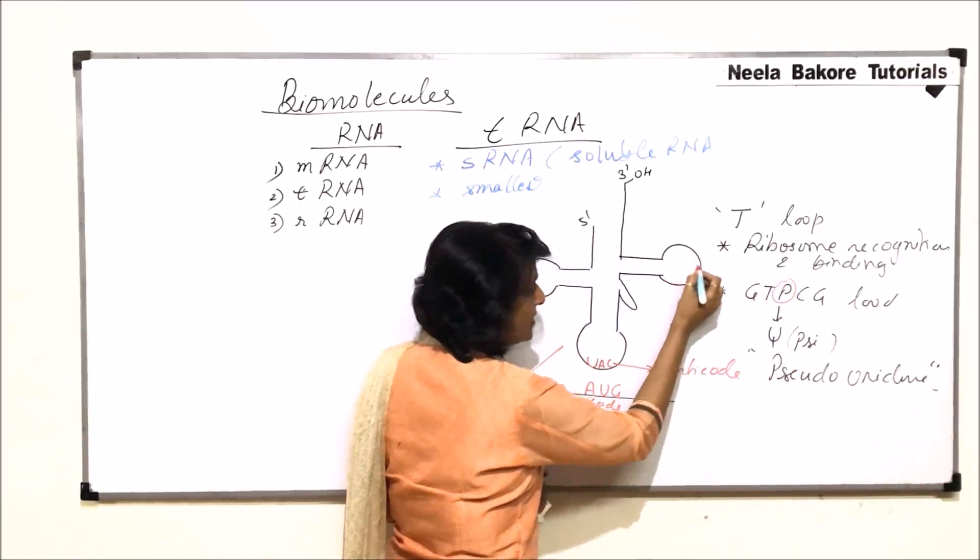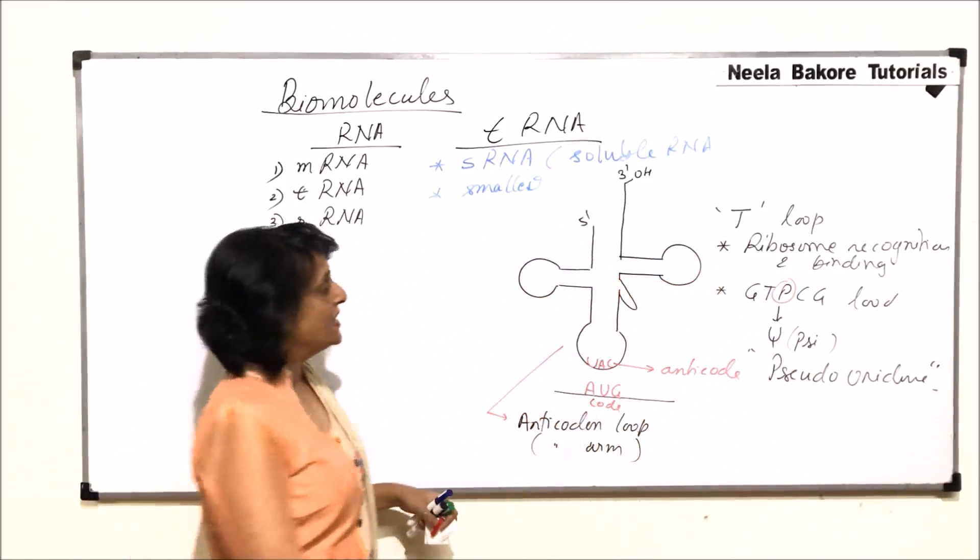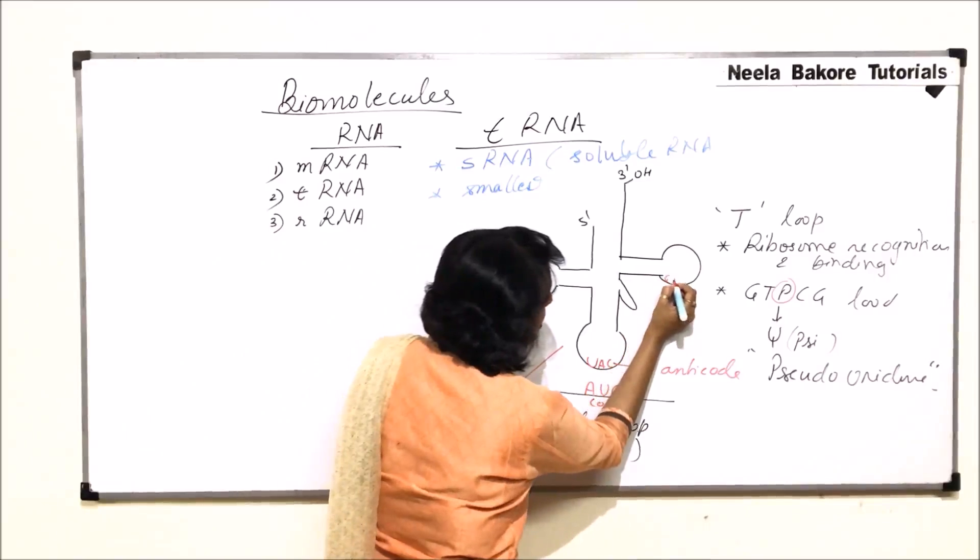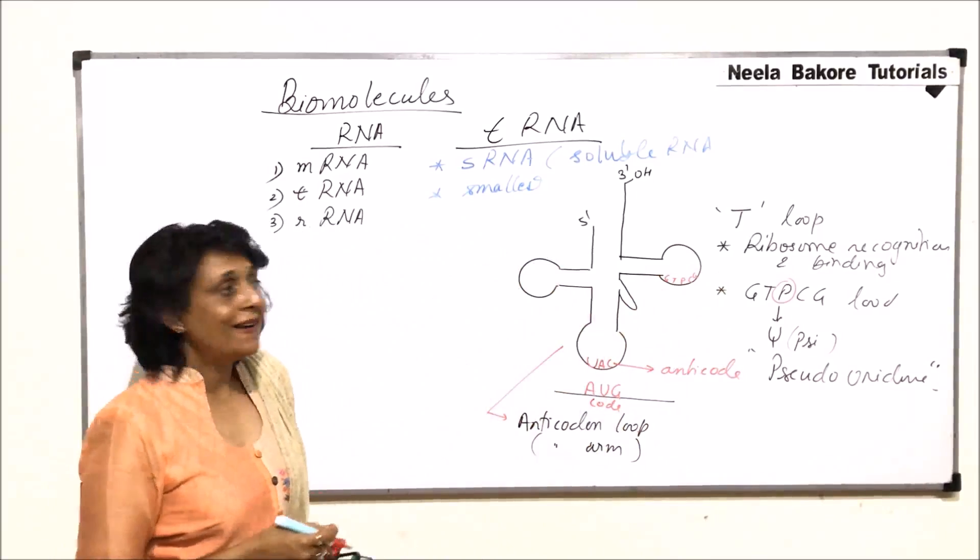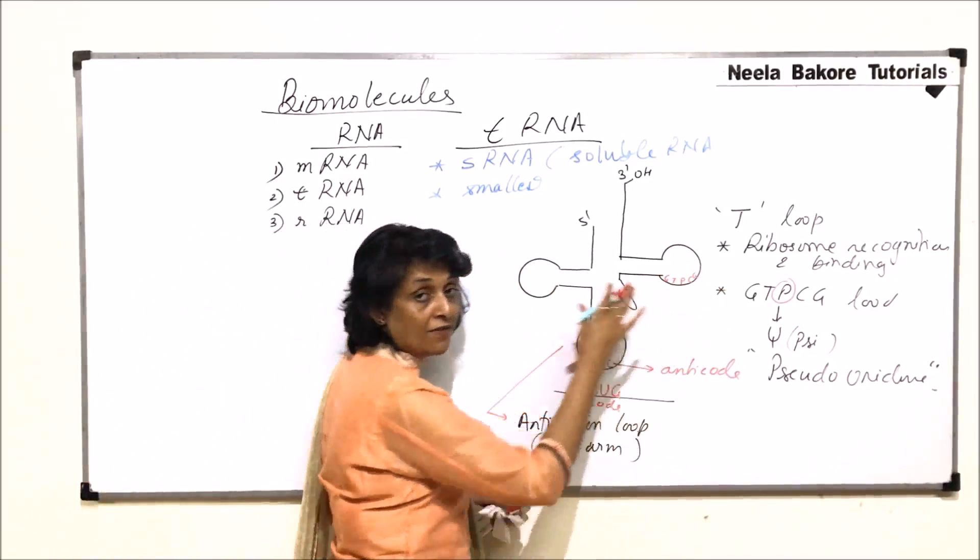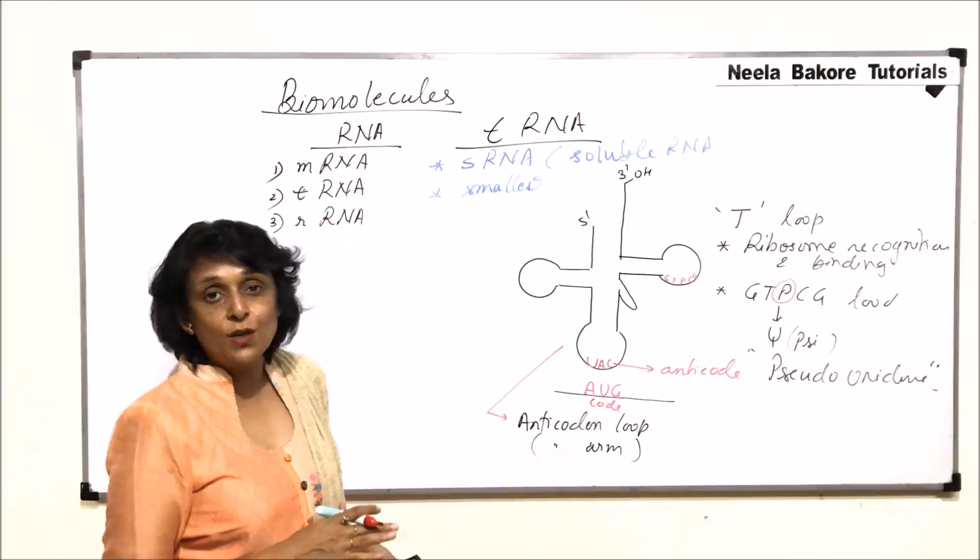And that modified uracil is known as pseudouridin which is represented either by psi or we can write it as P also in this part. So this is here and that is why it is known as GTPCG. So when we write it, it is going to be GTPCG. So this is the reason why the name has been given. Function is ribosome recognition, ribosome binding.